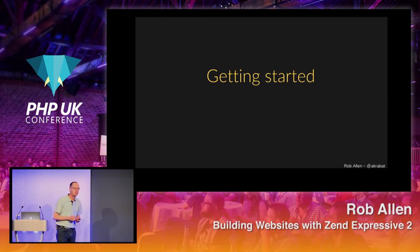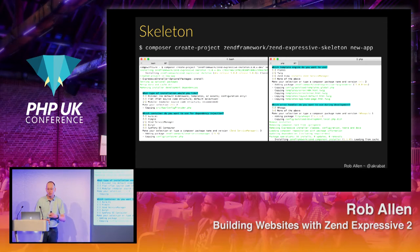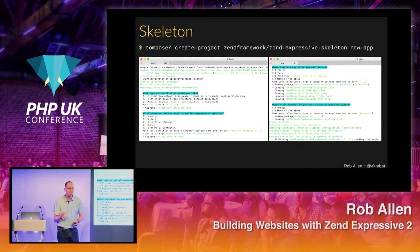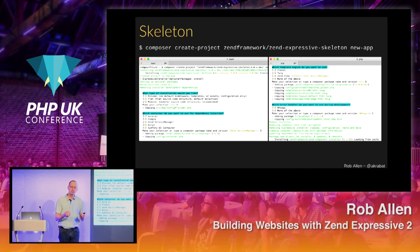How do we get started with Expressive? We use Composer — everyone uses Composer. Composer create-project, ZendFramework, and so on. What ZendExpressive does is leverage a feature of Composer to act as an installer. When you do your create-project, we hook into the Composer system to ask you what type of Expressive project you want — minimum, flat, or modular. We ask which router you want, which DI container you want, whether you want templates, and then we build up a project that matches what you're trying to do.